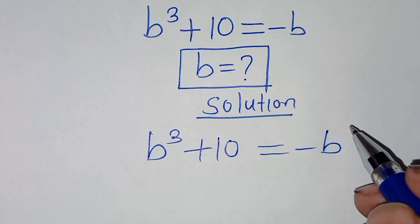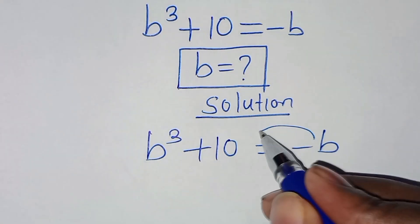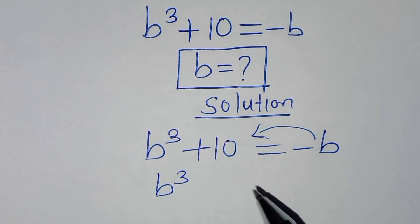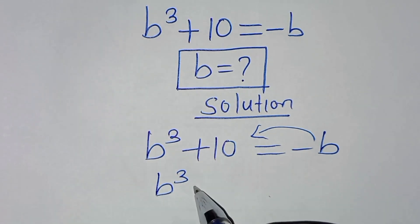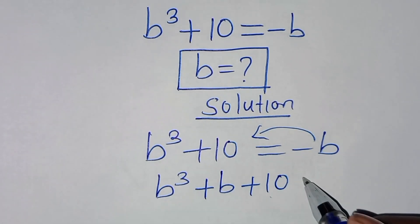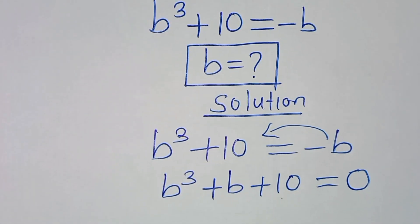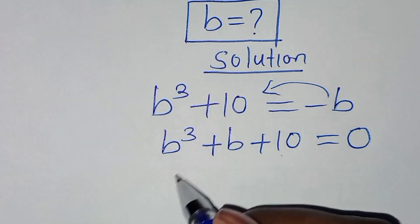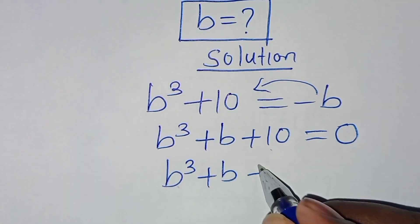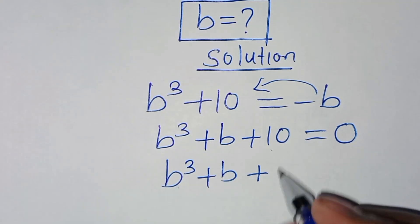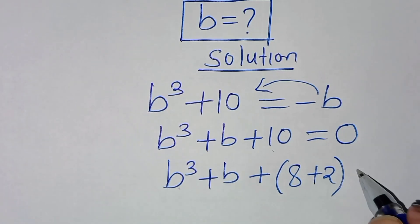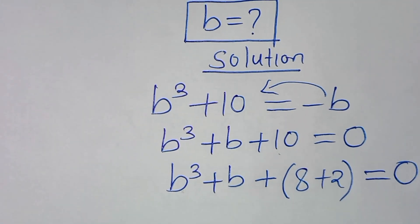The first thing to do here, let's take minus b on the right hand side, so that we have b to the power of 3, minus b here becomes positive, so we have plus b, then plus 10, this is equal to 0. The next step is that we have b to the power of 3 plus b, then plus — we can express 10 as 8 plus 2 — this is equal to 0.